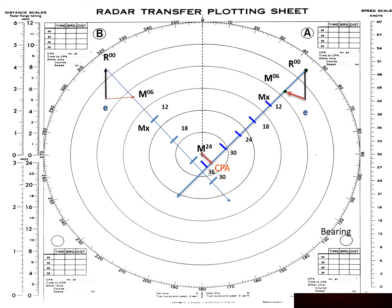I'm going to find a new course to steer in order to open up my CPA by 2 miles. I want to draw a new relative motion line from MX to my required CPA of 2 miles. I'm going to transfer MX to M06, draw that out to starboard since we're going to turn to starboard. I'm going to get my compass, stab E, and swing R00 to starboard, and I will get an R prime. My original course was from E to R00; my new course is going to be from E to R prime. We're going to parallel that to the middle of the plotting sheet, and we're going to find that course is going to be 038 degrees. So when contact A tracks down this relative motion line and reaches MX at 12 minutes, I'm going to alter course from due north to 038 degrees, and they will fall ahead of me by 2 nautical miles.